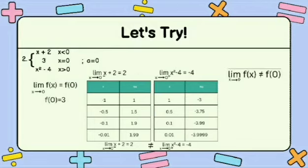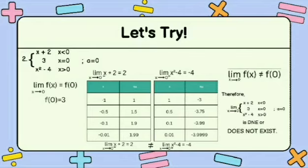The limit of X plus 2 as X approaches 0 from the left is not equal to the limit of X squared minus 4 as X approaches 0 from the right, and the limit of f of X as X approaches 0 and f of 0 are not equal. Therefore, the limit of the piecewise function as X approaches 0 does not exist.